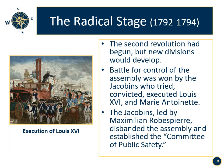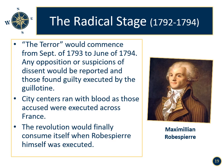The radical stage continued. The Second Revolution had begun, but new divisions would develop. The battle for control of the Assembly was won by the Jacobins, who tried, convicted, and executed Louis XVI and his wife Marie Antoinette. The Jacobins, led by Maximilien Robespierre, disbanded the Assembly and established the Committee of Public Safety. A new constitution would also be created in 1792. The Terror commenced from September of 1793 to June of 1794. Any opposition or suspicion of dissent would be reported, and those found guilty were executed by the guillotine. City centres ran with blood as those accused were executed across France. The revolution would finally consume itself when Robespierre was accused of treason and executed.